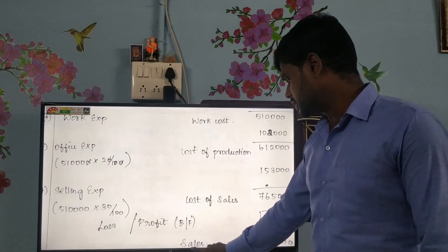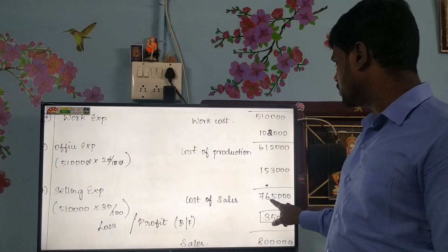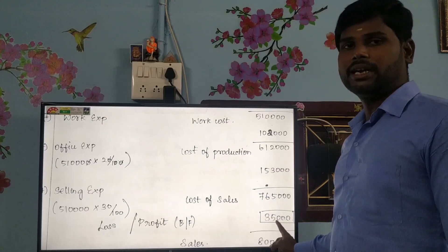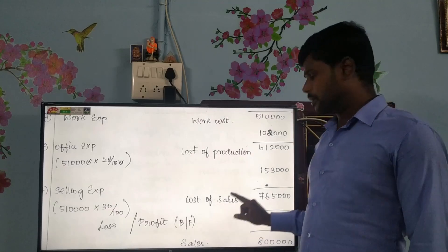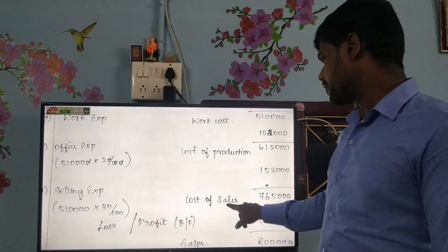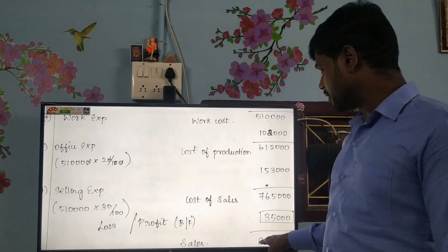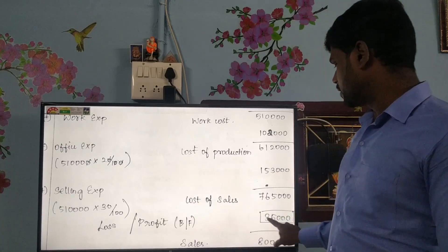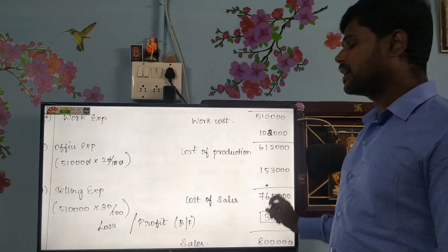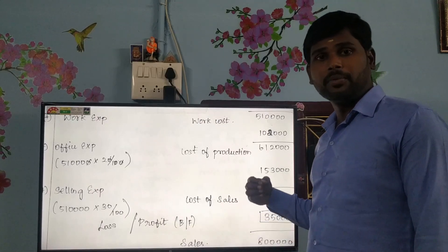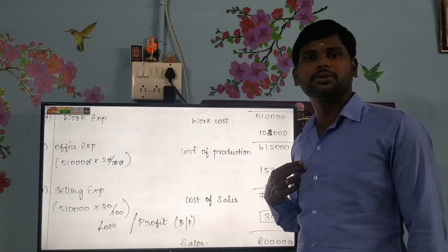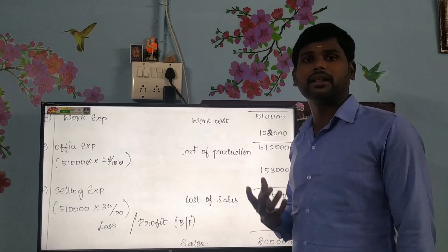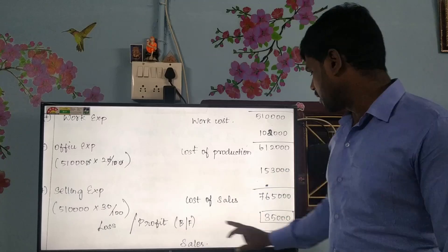Then we get sales. Sales is Rs. 8,00,000; the cost of sales value is Rs. 7,65,000. Remaining balance is Rs. 35,000 — this is the profit. In our example, if we sell at the cost of sales, if the selling price is low, we will get a loss. But if expenses are controlled, sales profit will be high. In this example, the profit is Rs. 35,000.